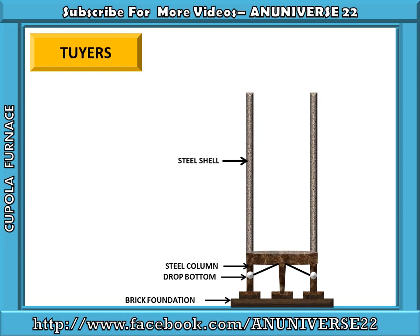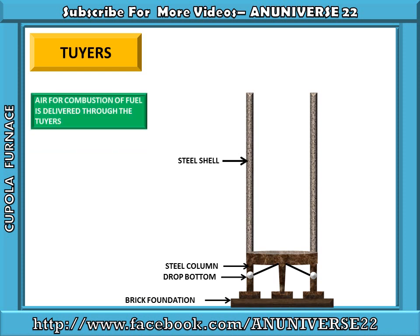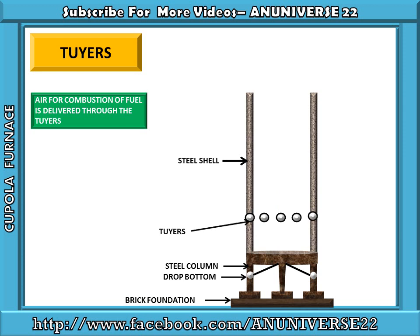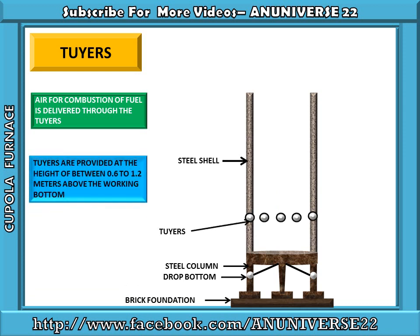Tuyeres. As we know, for the combustion of fuel we need air. Air for combustion of fuel is delivered through the tuyeres, which are mounted in the steel shell. Tuyeres are provided at a height of between 0.6 to 1.2 meters above the working bottom.